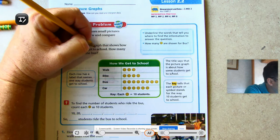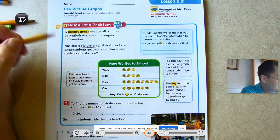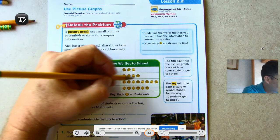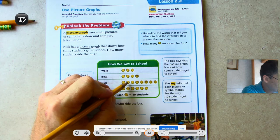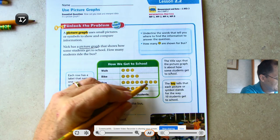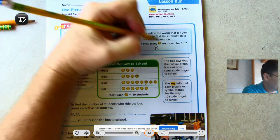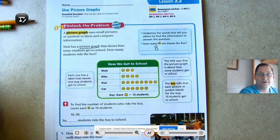A picture graph is how we're going to find our information. And for the bus, I see that there are 1, 2, 3, 4, 5, 6, 7, 8 smiley faces next to bus.